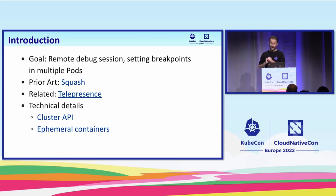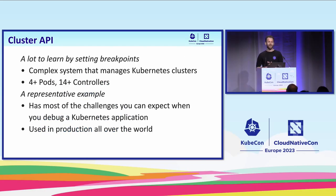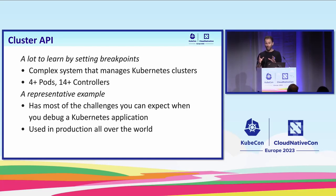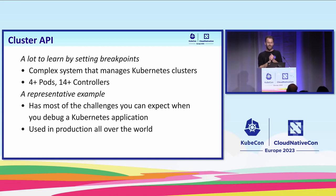Let's take a closer look at two things: cluster API, the application I want to debug, and ephemeral containers, the Kubernetes feature that helped me. Raise your hand if you know what cluster API is. So cluster API manages Kubernetes clusters, and it's also a Kubernetes application. I've been working with it since its start in 2018. Two words describe it: complex and powerful. It's composed of more than 14 controllers running in more than four pods. While debugging cluster API, I faced most of the challenges you can expect to face debugging any Kubernetes application.